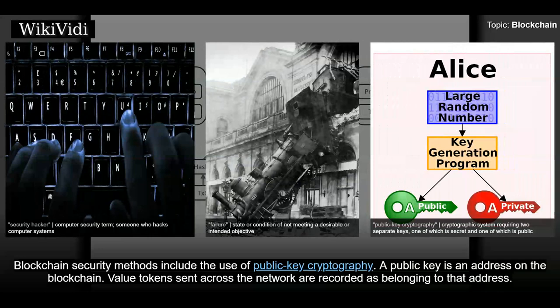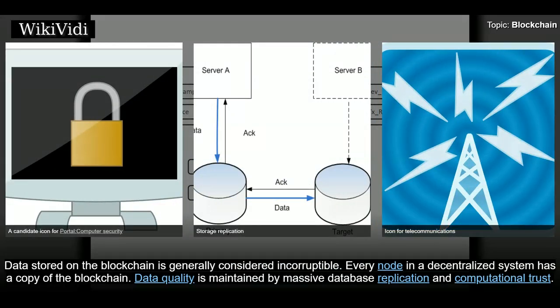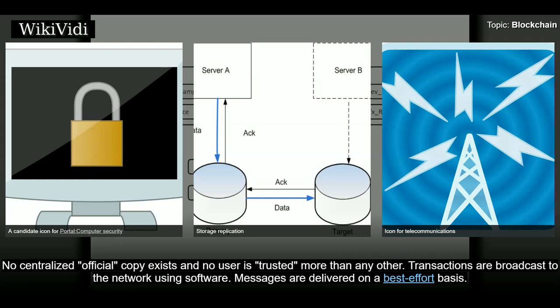A public key is an address on the blockchain. Value tokens sent across the network are recorded as belonging to that address. A private key is like a password that gives its owner access to their digital assets or the means to otherwise interact with the various capabilities that blockchains now support. Data stored on the blockchain is generally considered incorruptible. Every node in a decentralized system has a copy of the blockchain. Data quality is maintained by massive database replication and computational trust. No centralized, official copy exists and no user is trusted more than any other.